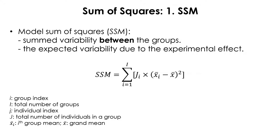First, let's look at the expected variance due to the experimental effect, or the effect of the between-subject factor. It is first estimated by calculating the model sum of squares, which is essentially the same operation as calculating variance.